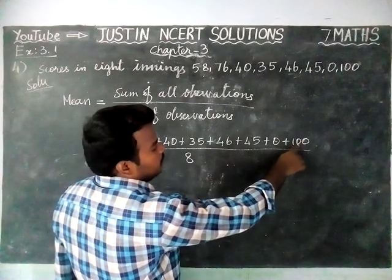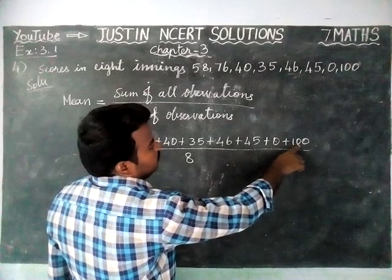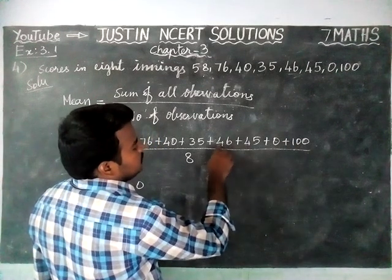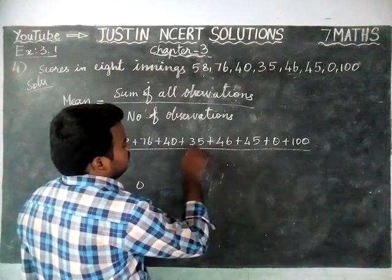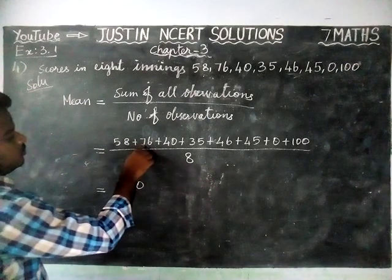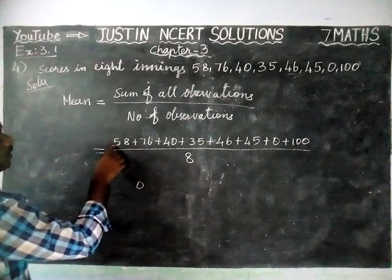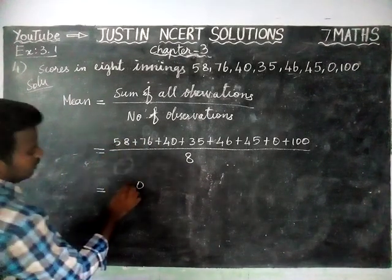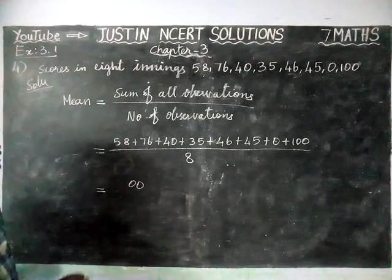Now we are going to add all the tens digits: 0, 4, 8, 11, 15, 22, 27, 30. Remaining carry is 3.